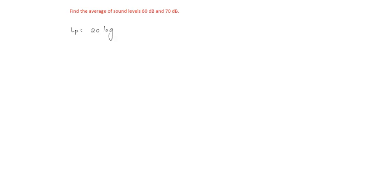Find the average of sound levels 60 decibels and 70 decibels. We know the average Lp equals 20 log of 1 by n of 10 power L1 by 20 plus 10 power L2 by 20 and so on up to 10 power Ln by 20. This is the formula for averaging sound levels.